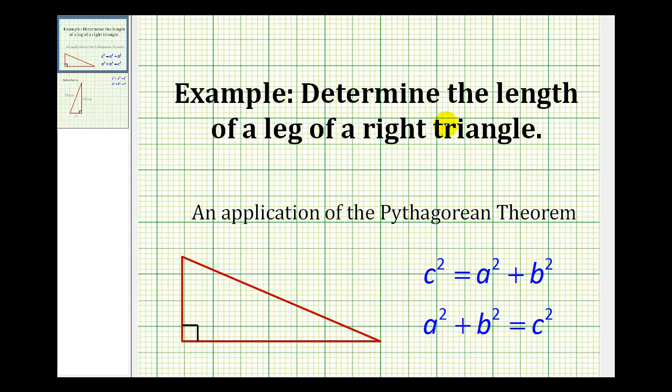Welcome to an example on determining the length of a leg of a right triangle using the Pythagorean Theorem. Sometimes you'll see the Pythagorean Theorem written two different ways. The main thing to notice is that in either case, c² is on one side of the equation by itself, where c represents the length of the hypotenuse.